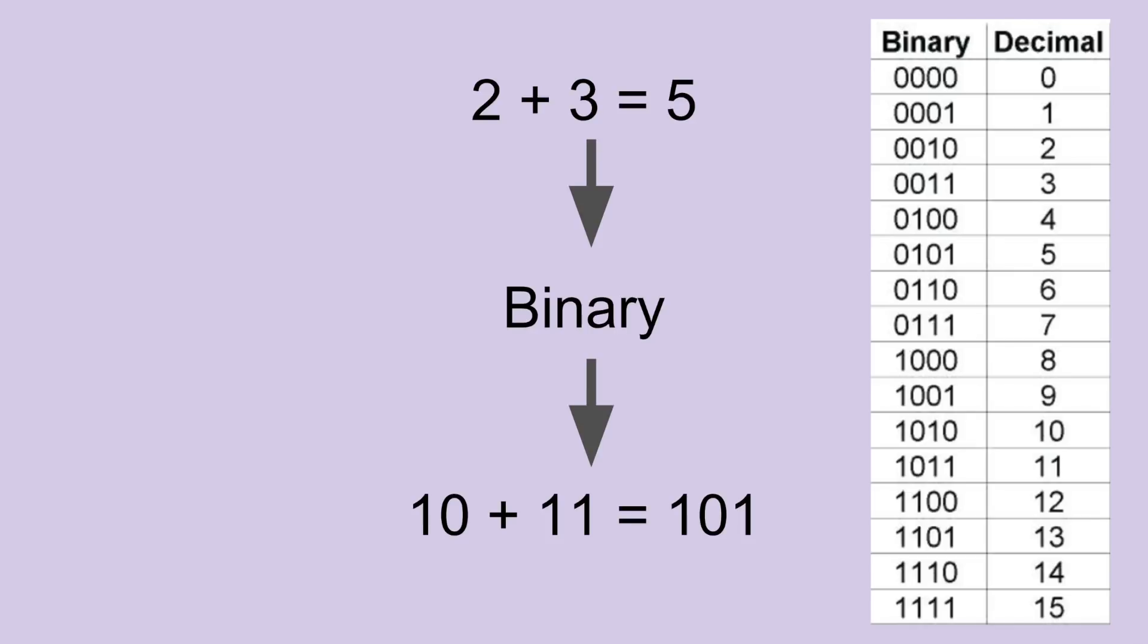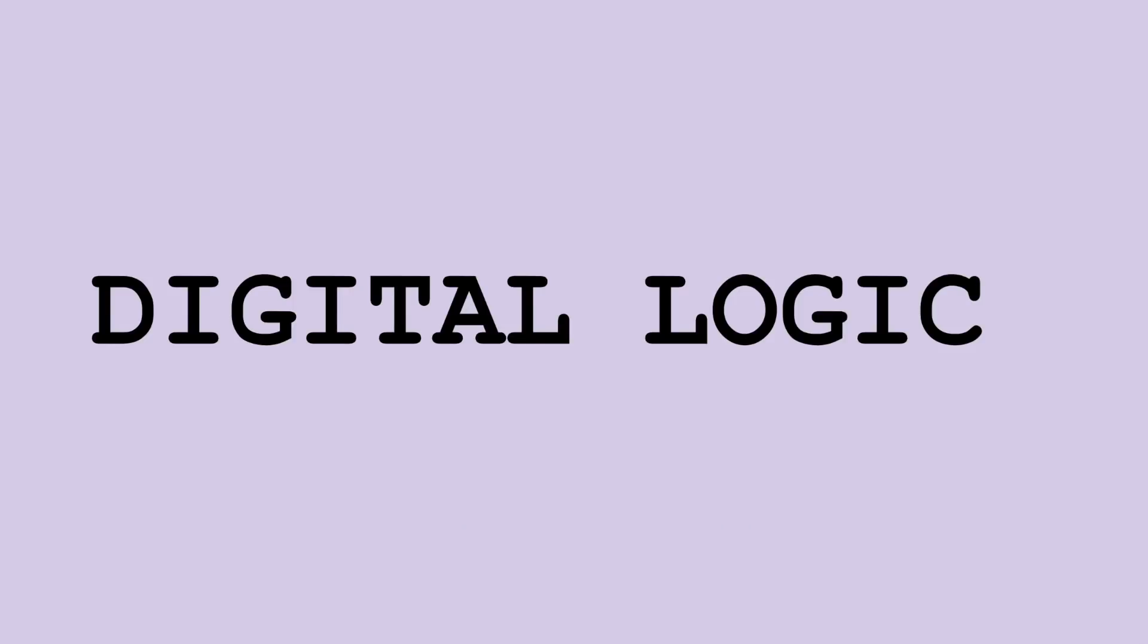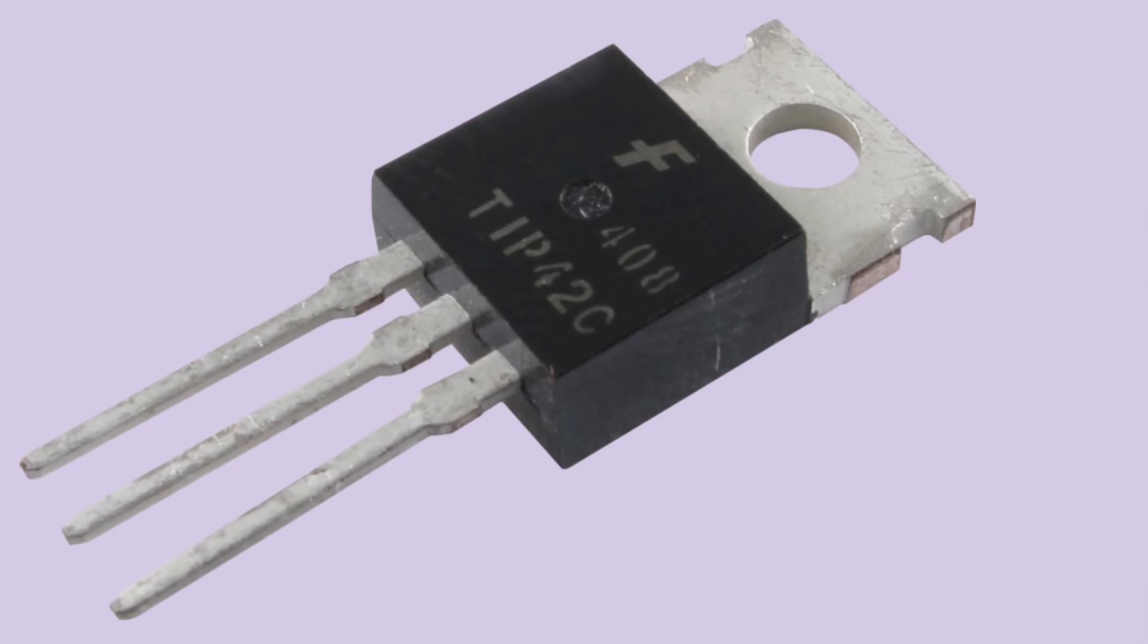It'll be easier for us later if we instead use binary numbers. Binary is just a way of representing any decimal number using only ones and zeros. You may have seen circuit components such as resistors, capacitors, diodes, or inductors, but the key to digital logic is a new circuit component called a transistor.